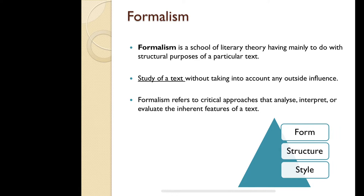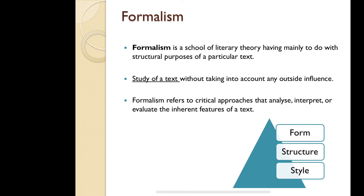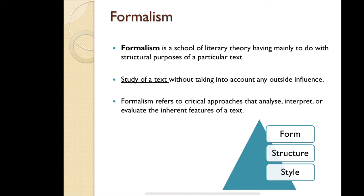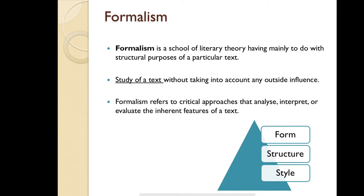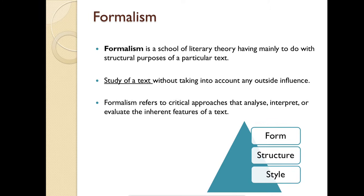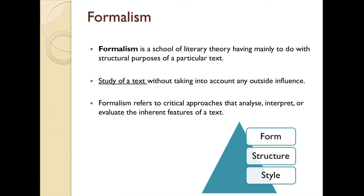Then came formalism. Formalism emerged in Russia as well as in Prague — and just because Prague is a French word, it is called French formalism. So there were two kinds of formalism: Russian formalism and French formalism. They came in the 1920s in Europe, and in Britain also they came in the 1920s. Simultaneously, formalism came about in two places. Formalist critics said that the form of the text is important, structure is important, and style is important.